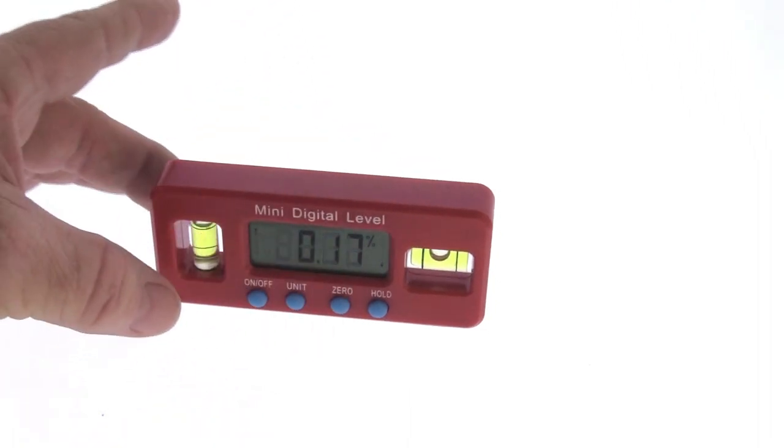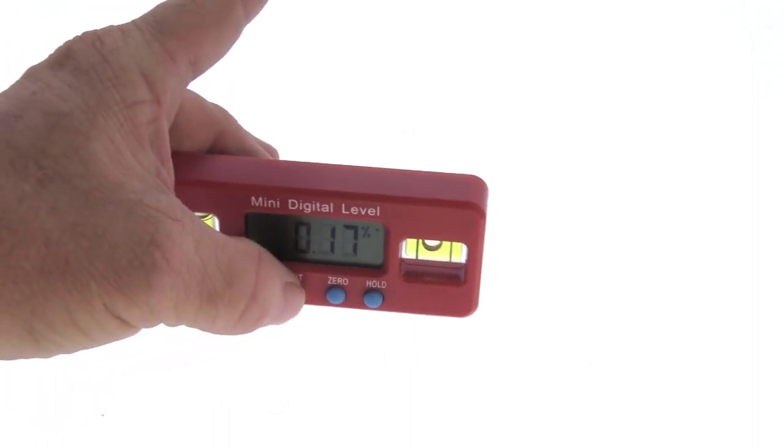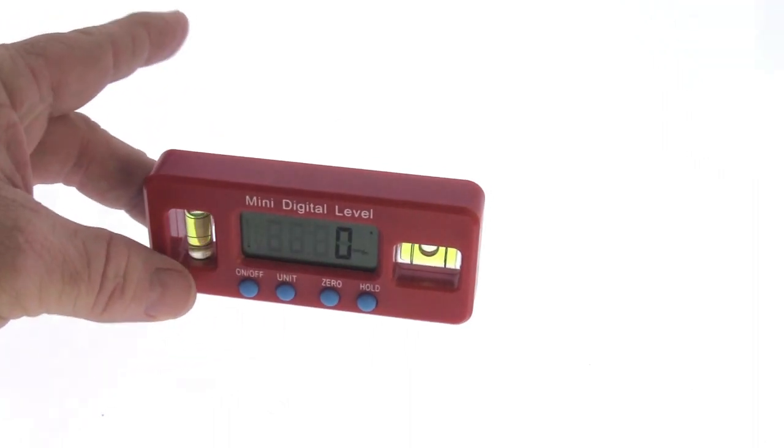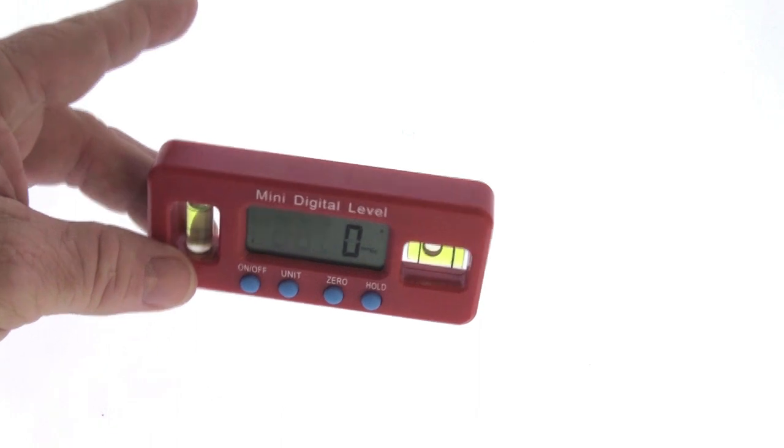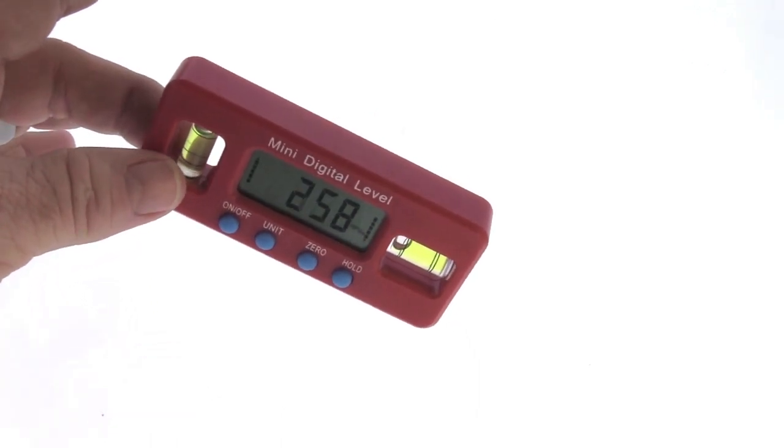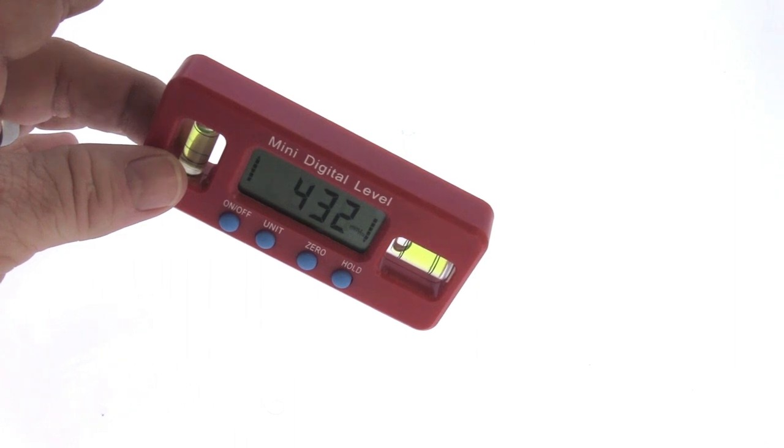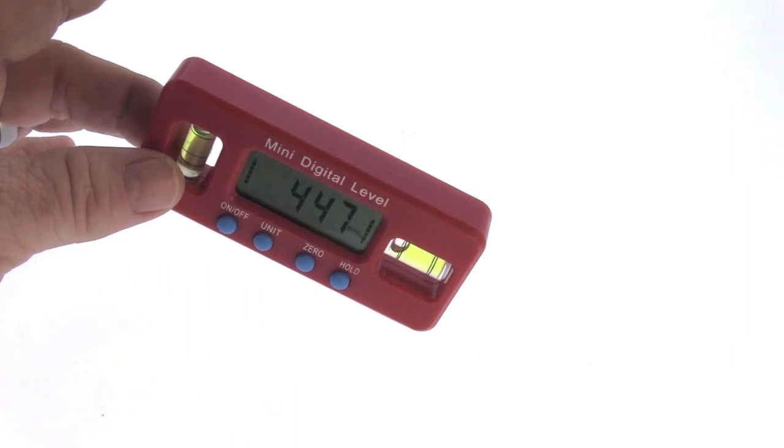Let's set it back to zero. There we go. That unit again. And this gives you millimeters rise per meter. So at this angle, at one meter, you will have a 432 millimeter rise. I have to hold it steady.